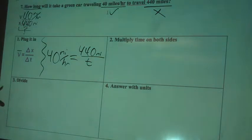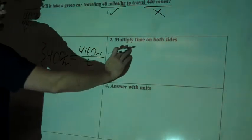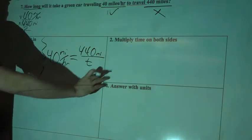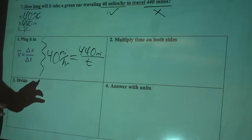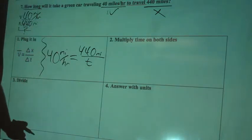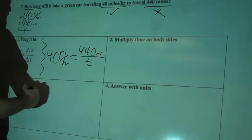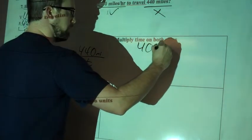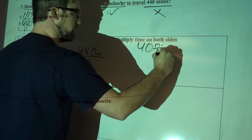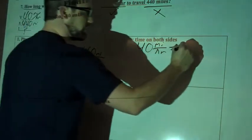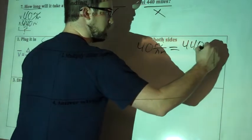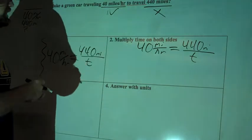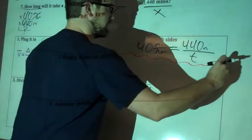Next step, multiply time on both sides. We're going to try to get time up outside of the denominator so that we can get it up there, and then we can do more algebra to divide and solve for that T. So I'm going to rewrite my equation over here. So 40 miles per hour equals, and I've got 440 miles divided by time.